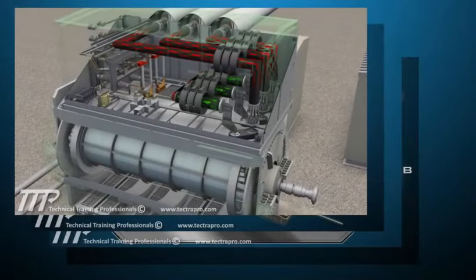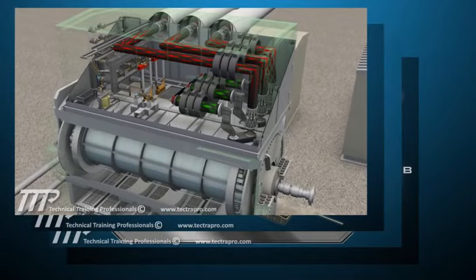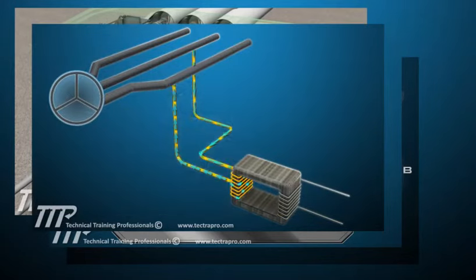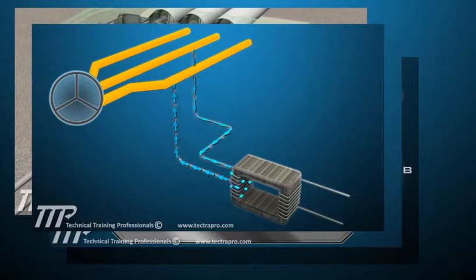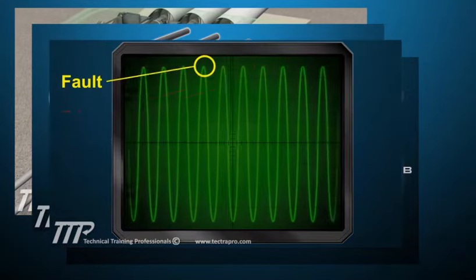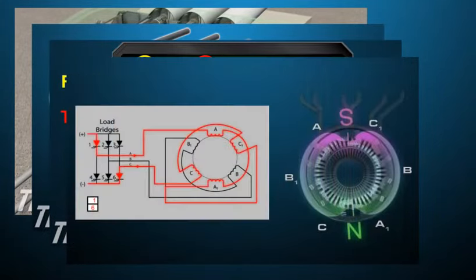The generator electrical section includes the construction of the generator, operation of its electrical components, fault protection, and operation of the load commutating inverter, or LCI.